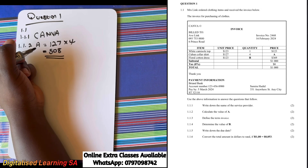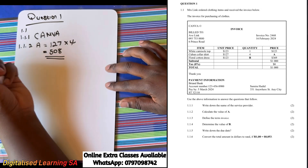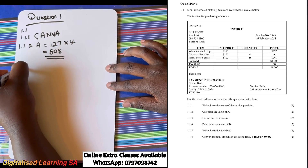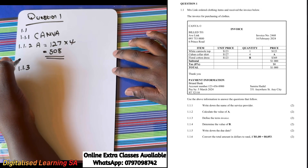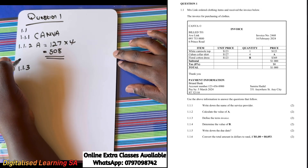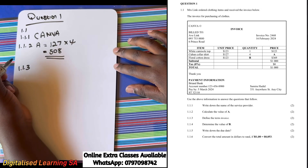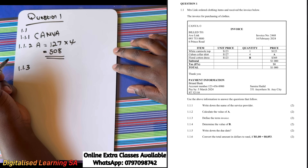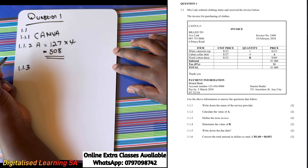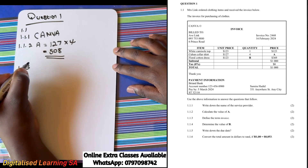Now let's move to question 1.1.3, which says: define the term invoice. An invoice is a document a seller gives to a buyer that shows what was bought, how much it costs, and when the money must be paid.